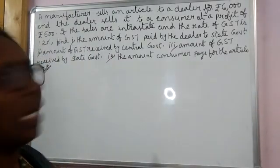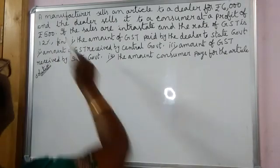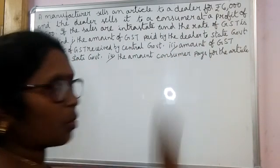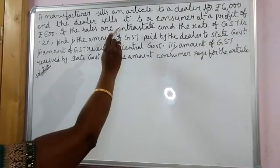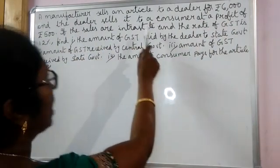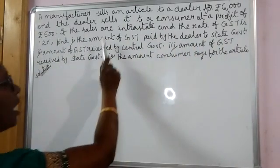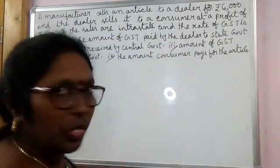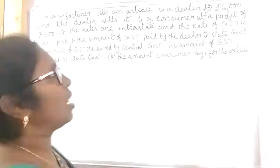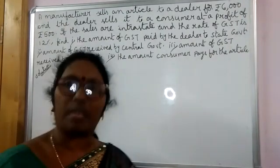Hello. I have come up with a question on GST. Let me read it out first. A manufacturer sells an article to a dealer for 6000 rupees and the dealer sells it to a consumer at a profit of 500 rupees. If the sales are intrastate and the rate of GST is 12 percent, find: the amount of GST paid by the dealer to the state government, the amount of GST received by the central government, the amount of GST received by the state government, and the amount paid by the consumer for the article.